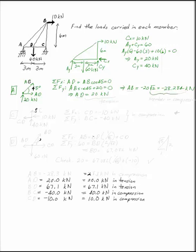When you get a negative number, that means your member is in compression. Now, I picked in my free body diagram both of the arrows to be going out from the point.